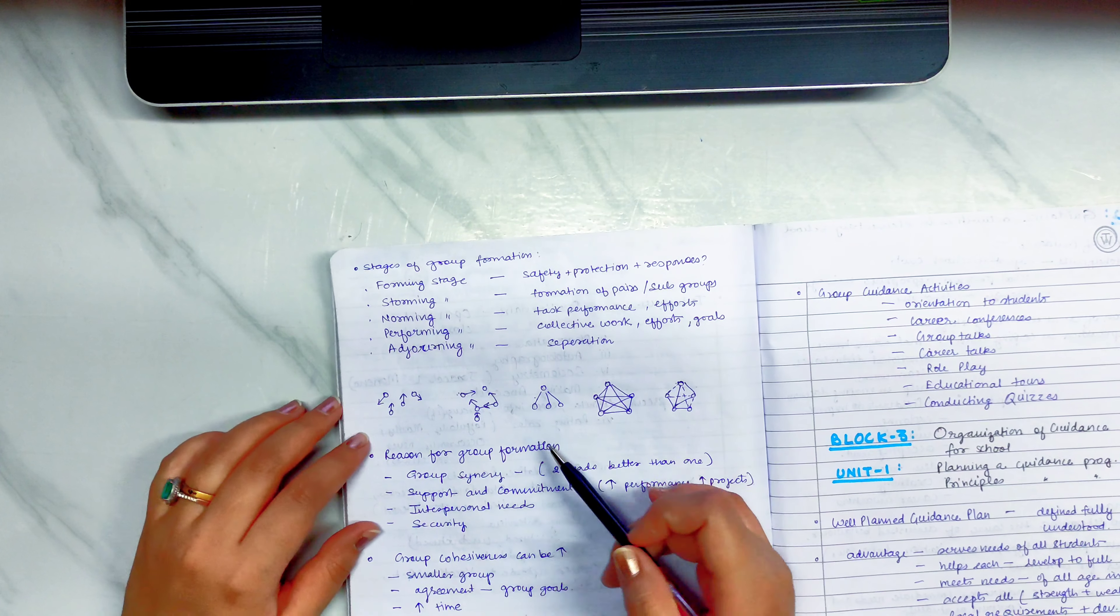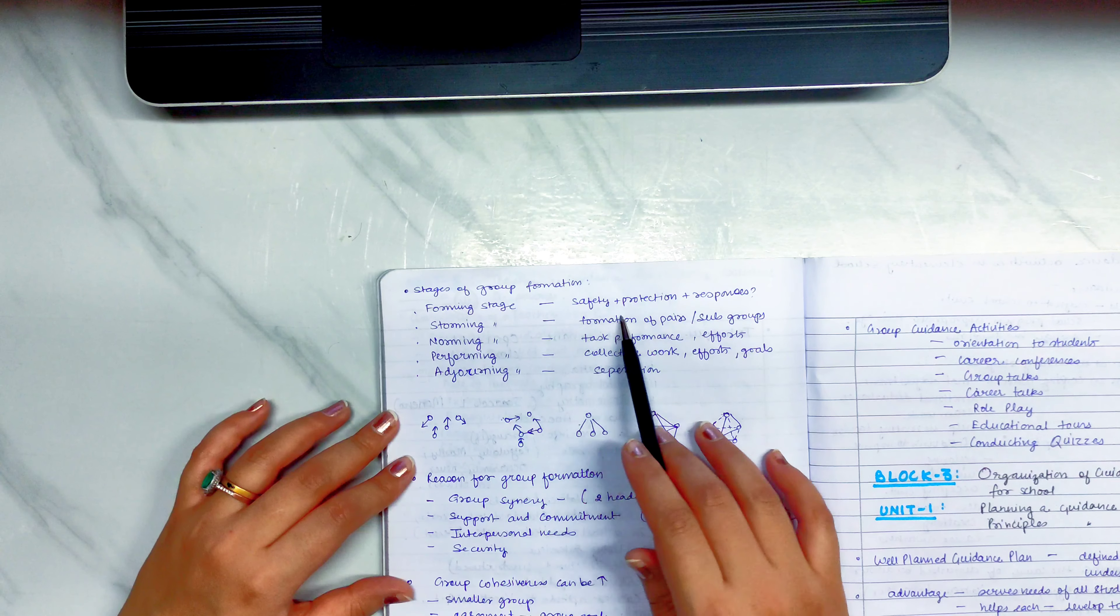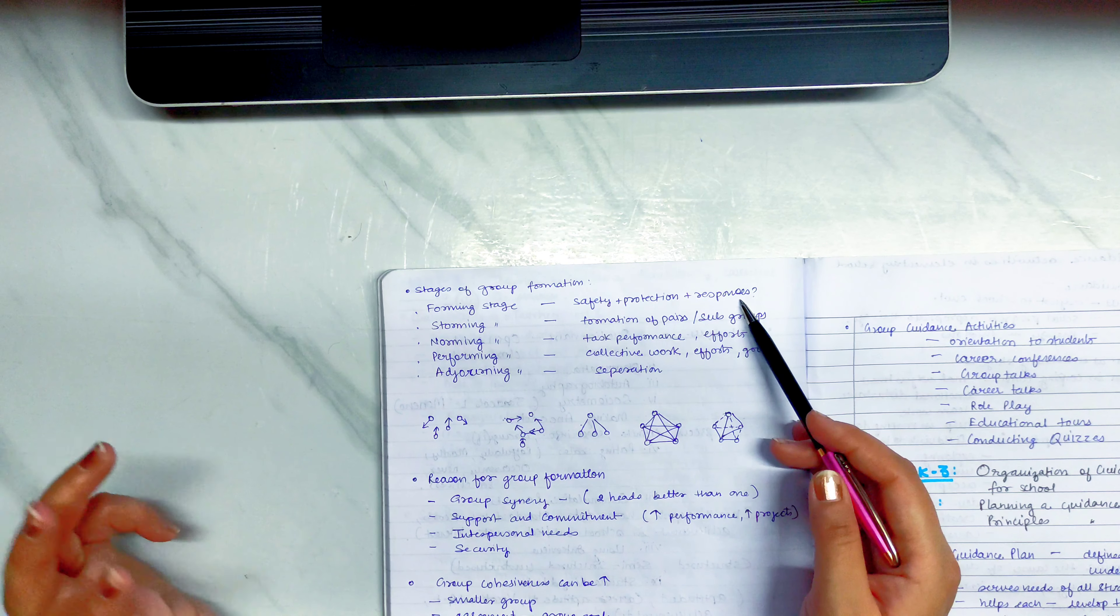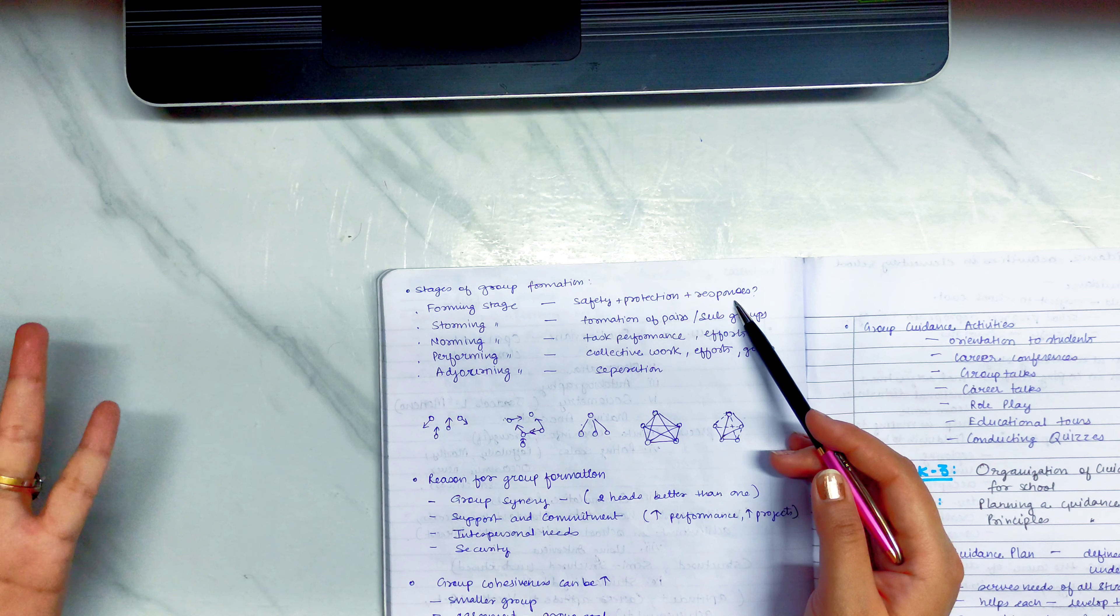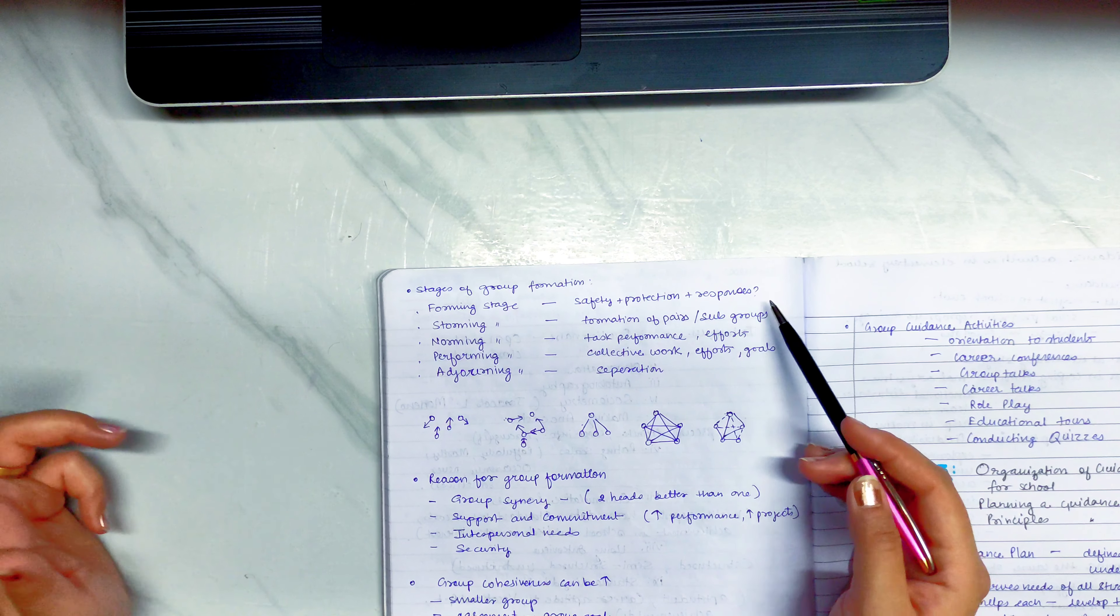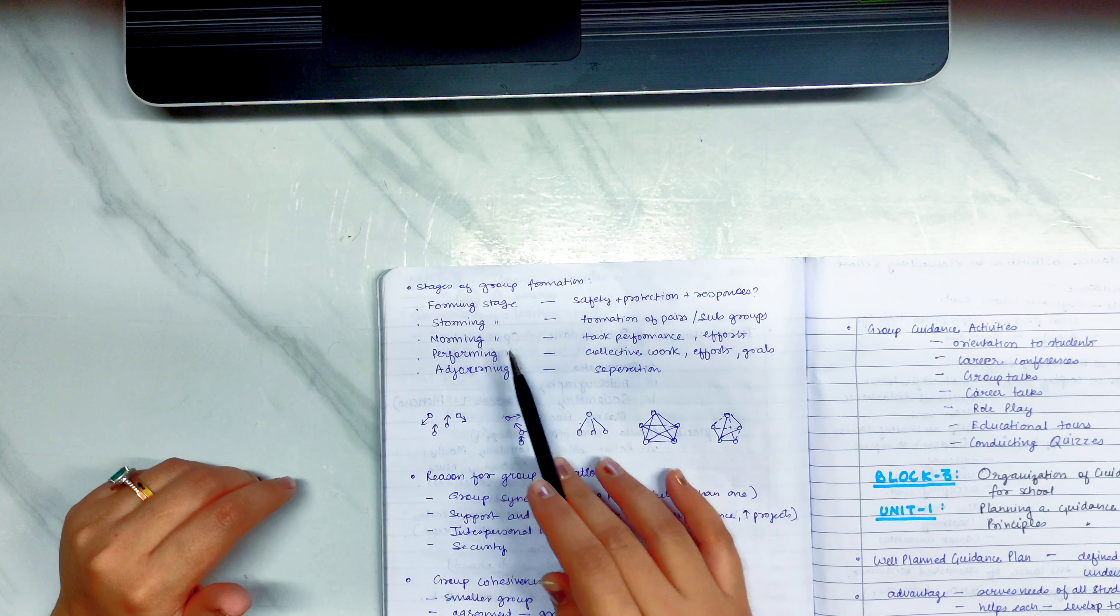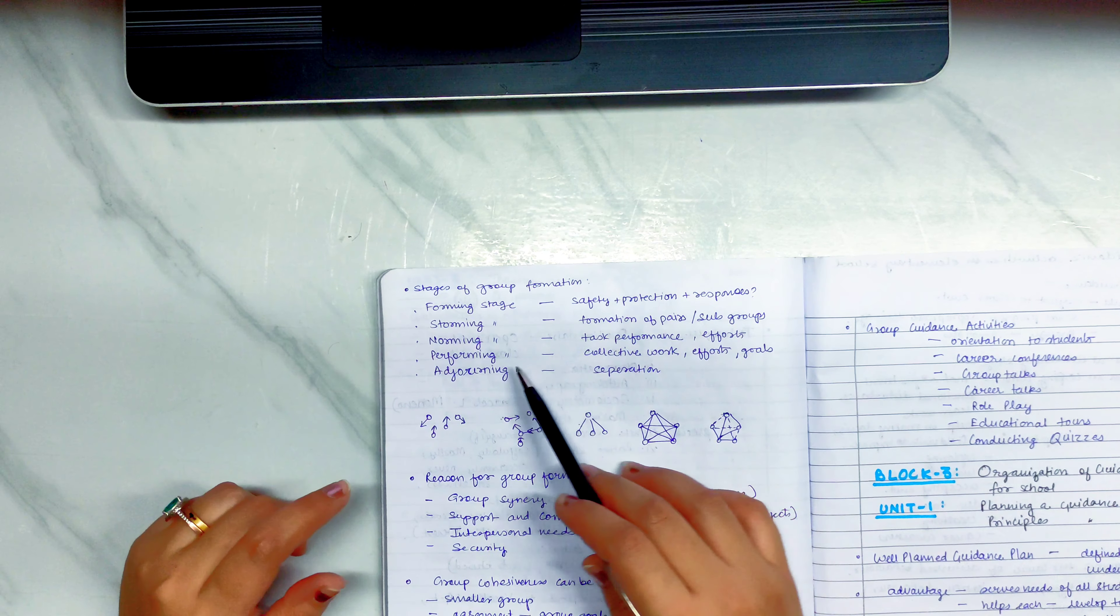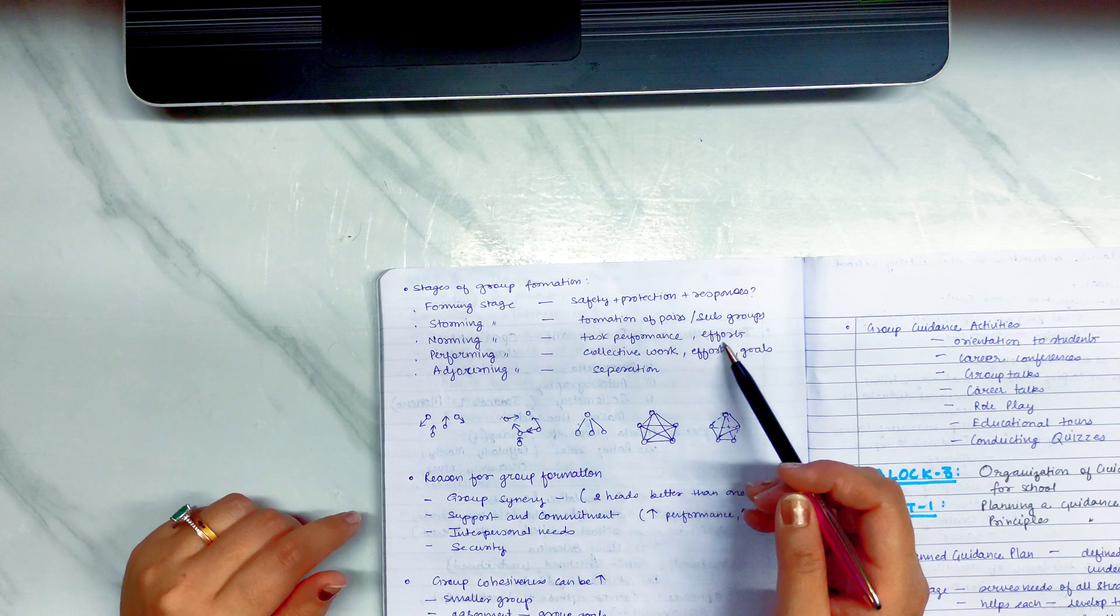Then there are stages of group formation. There are 5 stages. There is the forming stage, where you see safety, protection and response. If you have to make a group, you will see how they will get safety and protection. When you are in groups, you will see these responses. The forming stage is formation of pairs, subgroups. When you become subgroups, it is your forming stage.